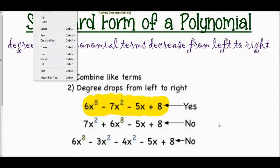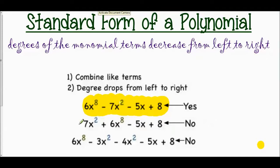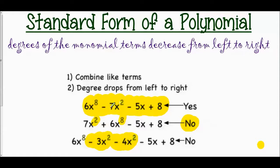The second version — seven x squared plus six x to the eighth minus five x plus eight — has like terms combined but degrees out of order, so that's not standard form. The third version — six x to the eighth minus three x squared minus four x squared minus five x plus eight — has degrees decreasing, but the like terms negative three x squared and negative four x squared have not been combined into negative seven x squared. Standard form requires both: combined like terms and decreasing degrees.